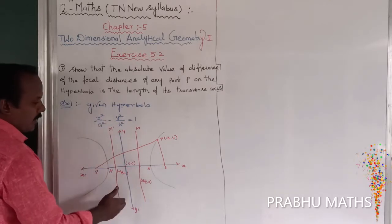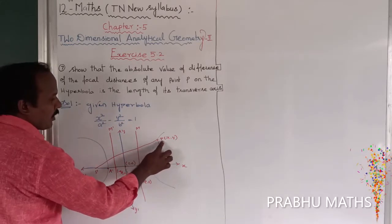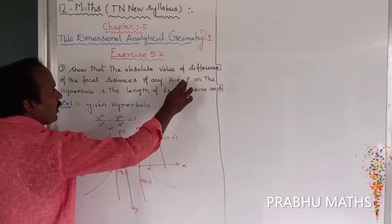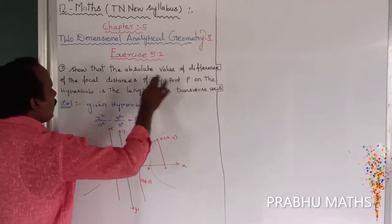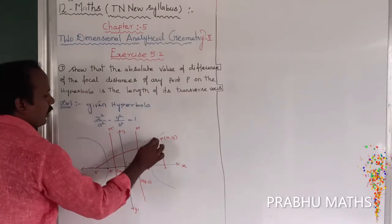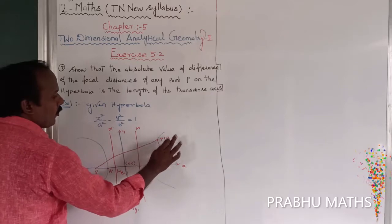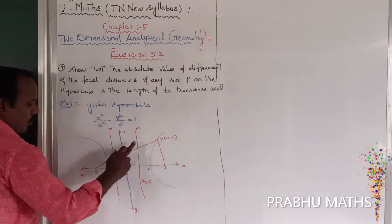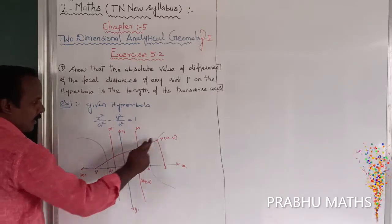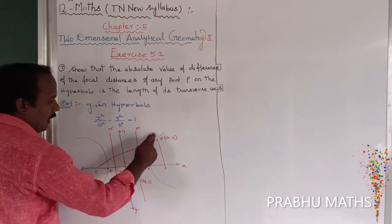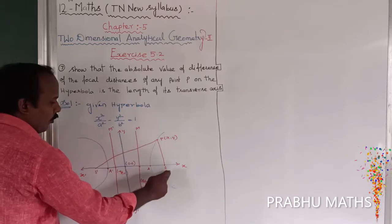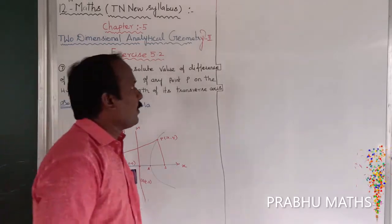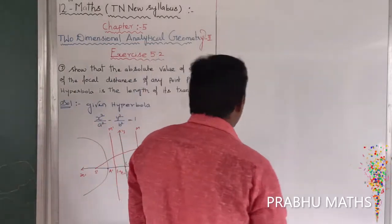Next is the y-axis. So P is any point on the hyperbola — that is P, any point on the hyperbola. That is P. Let us take the value of x, y. The distance between — so S dash P is the difference of SP. S dash P, difference of SP.